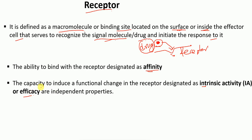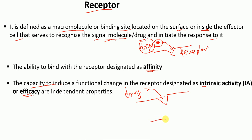What is intrinsic activity? The intrinsic activity, or simply efficacy, is the capacity to induce a conformational change in the receptor. For example, let's say this is the receptor before — here we have the drug molecule — and when this drug molecule binds with the receptor, there is a conformational change. So this is the ability, or the capacity, of the drug molecule or the signaling molecule to induce a functional change in the receptor.